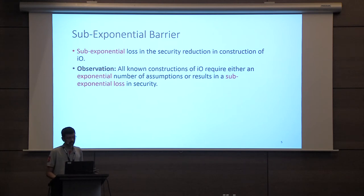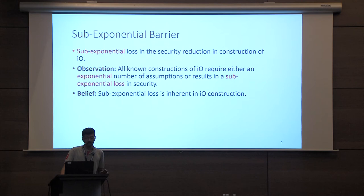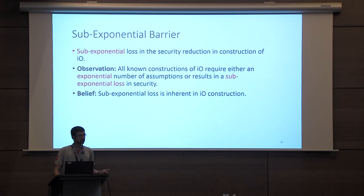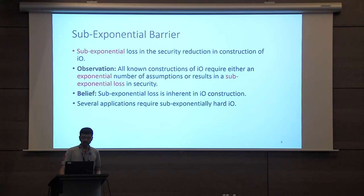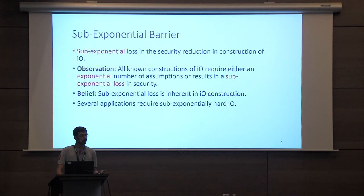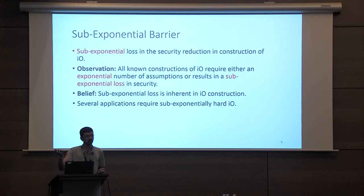We strongly believe that this sub-exponential loss is inherent to the construction of IO, and this sub-exponential loss carries over to any application of IO as well. Furthermore, several applications of IO — including some I mentioned on the previous slide — require sub-exponentially hard indistinguishability obfuscation to prove their security. So for such applications there are two sub-exponential losses: one in the construction of IO, and another from IO to that particular application.